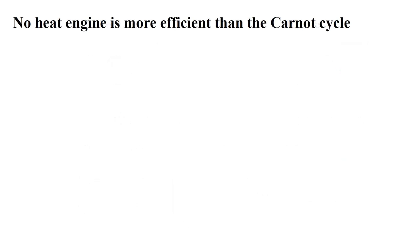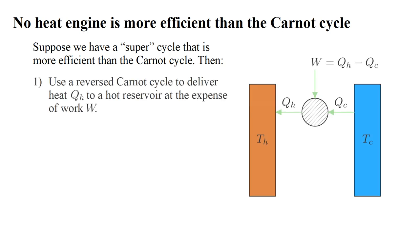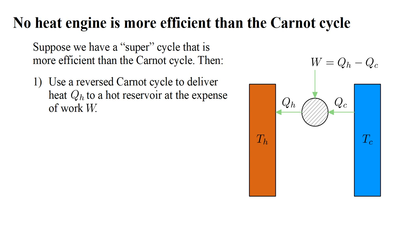Now, let's consider Carnot's principle, the claim that no heat engine is more efficient than the Carnot cycle. Let's suppose that we have found a super cycle, that is more efficient than the Carnot cycle. Then, we could do the following. Use a reversed Carnot cycle to deliver heat Q hot to a hot reservoir, at the expense of work W. In the process, heat Q cold is extracted from a cold reservoir.